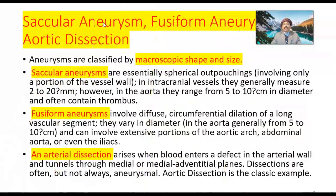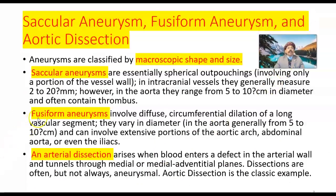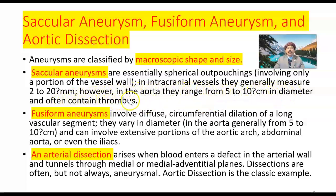Aneurysms are classified by macroscopic shape and size into saccular aneurysm, fusiform aneurysm, and aortic dissection. A saccular aneurysm is an essentially spherical outpouching involving only a portion of the vessel wall. In intracranial vessels they generally measure 2 to 20 mm; however, in the aorta they range from 5 to 10 cm in diameter and often contain thrombus.